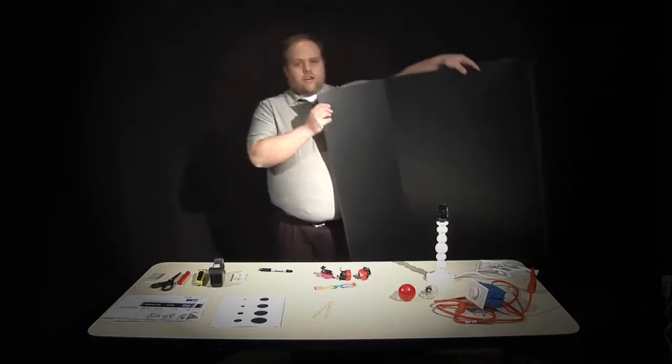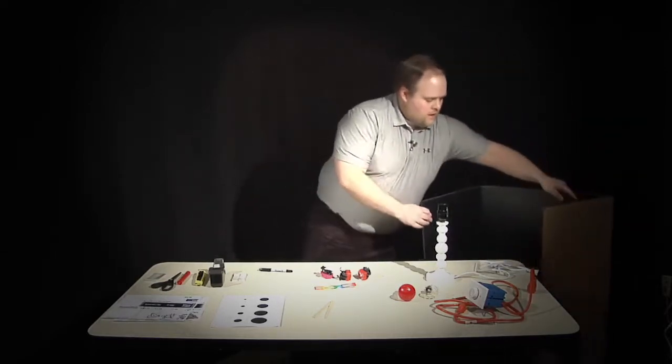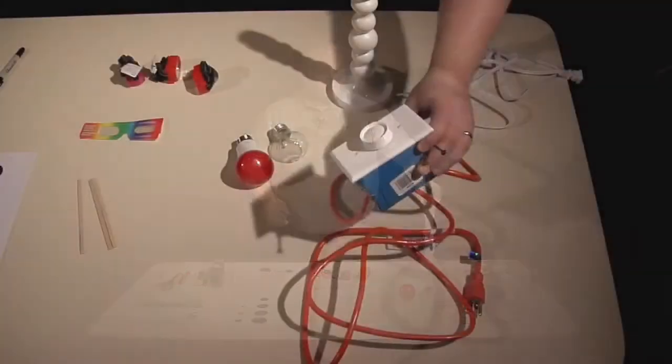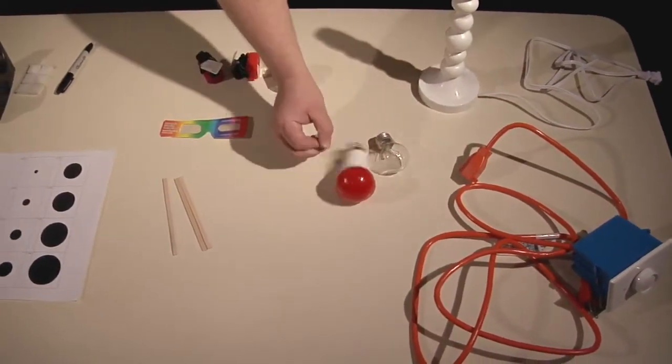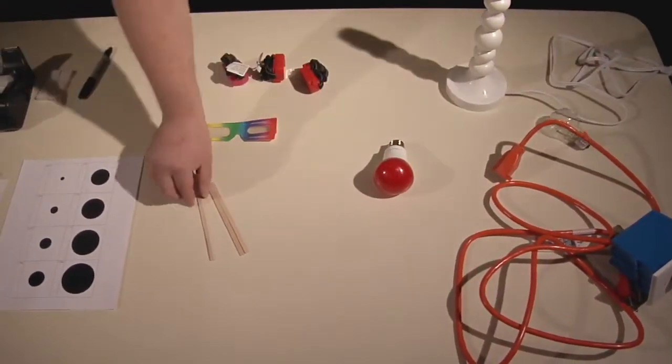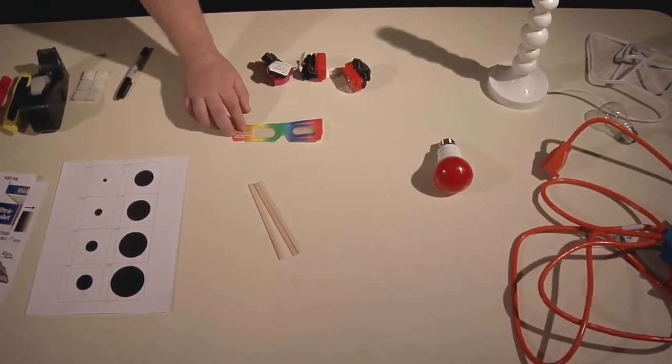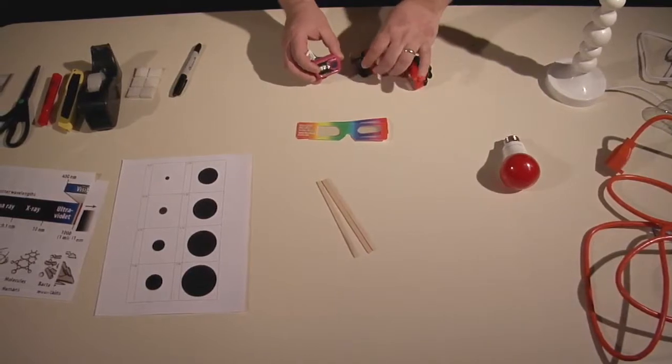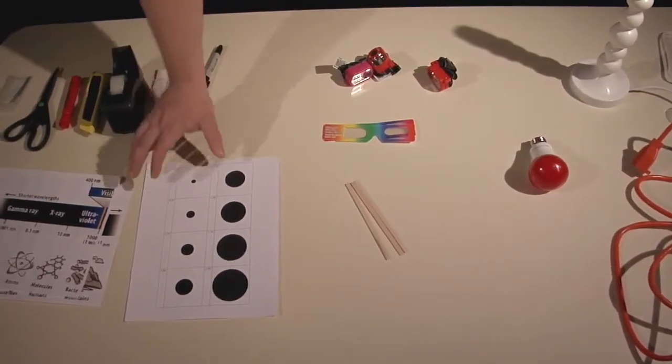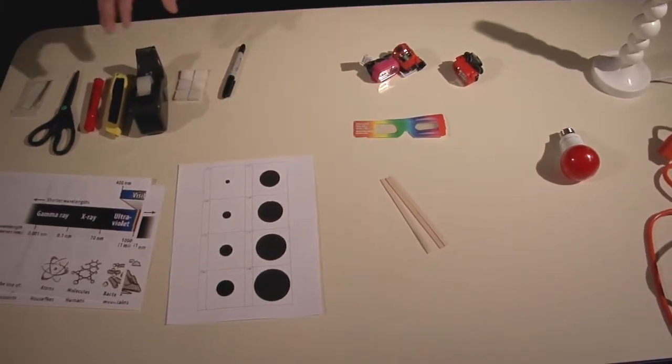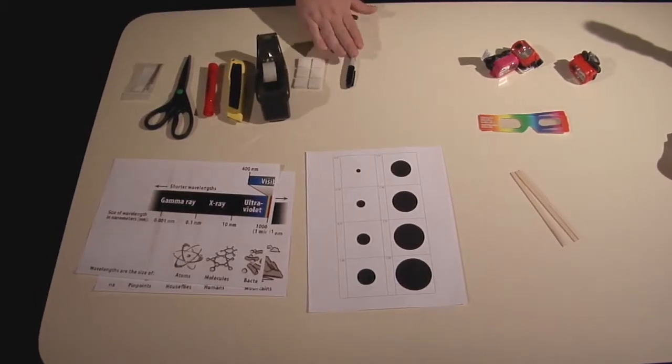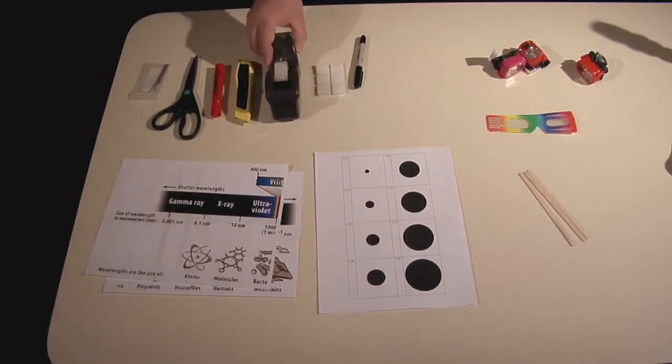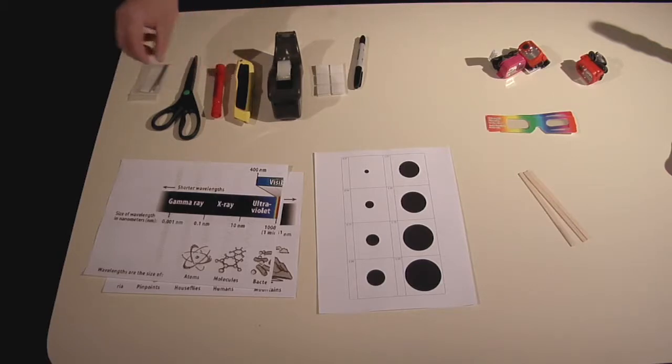We start with a large science display board, a simple lamp, a dimmer switch and extension cord. The directions are also in the resource guide. Clear light bulb, red light bulb, popsicle sticks, diffraction glasses, LED headlamp, our chronograph template, our electromagnetic spectrum banner, sharpie, velcro, tape, knife, red marker, scissors, and sewing pins.